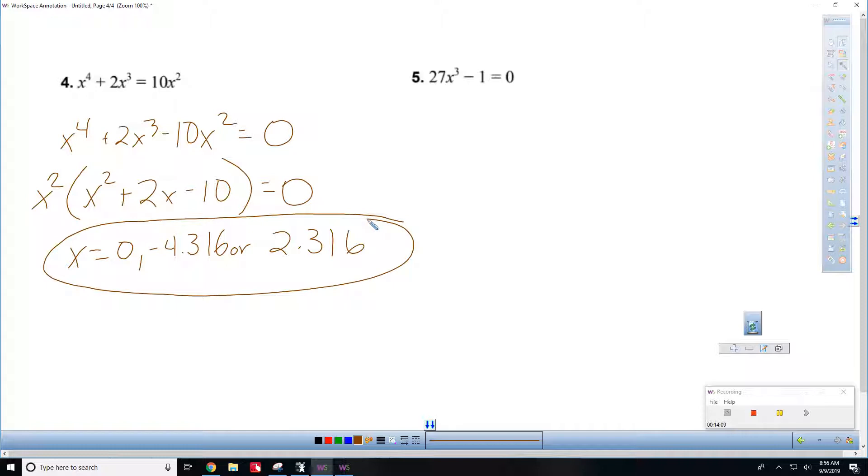All right. Number 5. This looks like a difference of cubes. Okay. Remember, same, opposite, positive. So, this is 3x cubed minus 1 cubed equals 0. Let's factor it. So, 3x minus 1, same, times 3x opposite plus, sorry, 3x squared. Oh, no, no. That should be 9x squared.